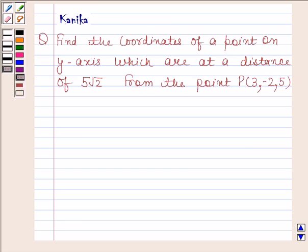Hi and welcome to the session. Let us discuss the following question. The question says find the coordinates of a point on y-axis which are at a distance of 5√2 from the point P having coordinates 3, -2, 5.